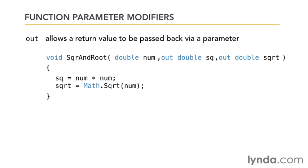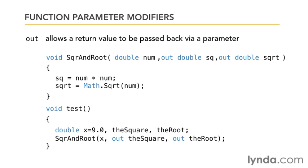Inside the body of the function, I would simply assign values to the square and square root results. For sq, I would simply multiply num by itself, and that's the square of the number. And then for sqrt, I'm using the .NET Framework's math library to calculate the square root of that number. When I call this from a function, say, named test, and I pass in the parameters, you'll notice that I have to put the out keyword in front of the parameters that I'm passing in.